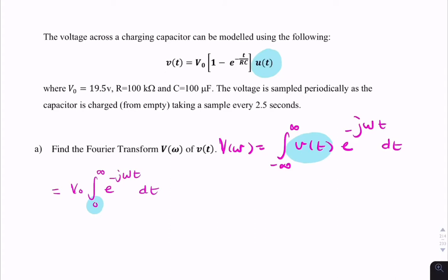The next component is the exponential, so it's minus V0 from 0 to infinity. Again, the 0 is because of the unit step.